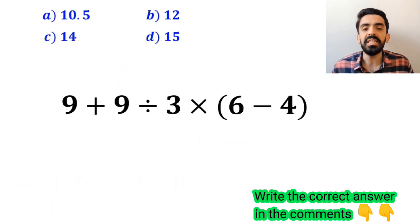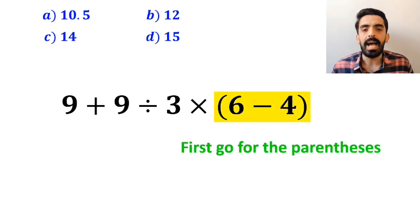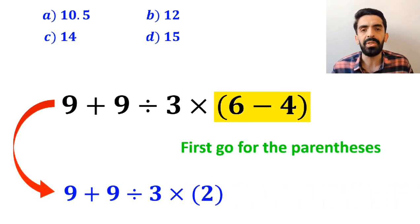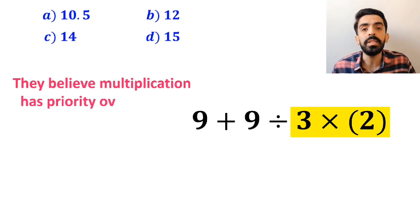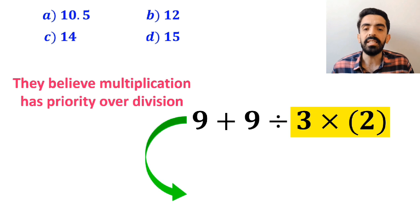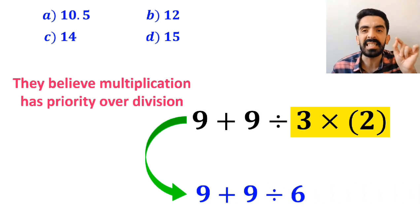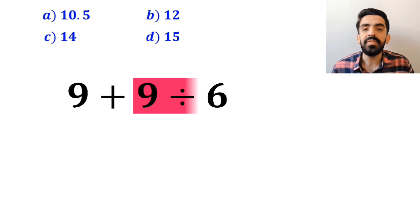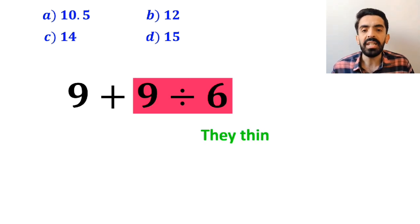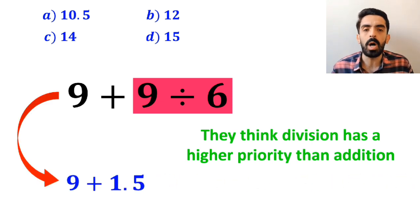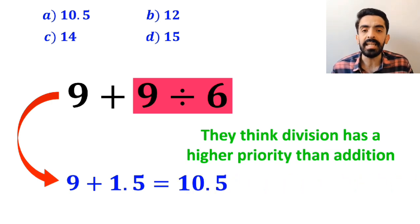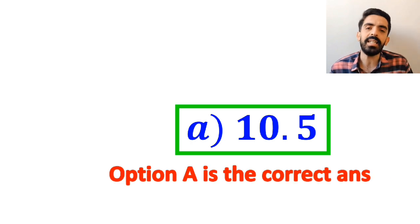Also, some other people, when solving this question, first go for the parenthesis and rewrite this expression as 9 plus 9 divided by 3 times 2. In the next step, they go for the multiplication between 3 and 2, because they believe multiplication has priority over division. So this expression simplifies to 9 plus 9 divided by 6. Then they go for the division between 9 and 6, because they think division has a higher priority than addition. And they rewrite this expression as 9 plus 1.5, which ultimately gives them the answer 10.5. And immediately, they conclude that option A is the correct answer to this question.